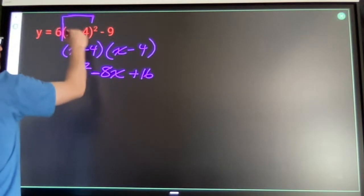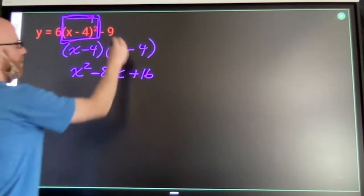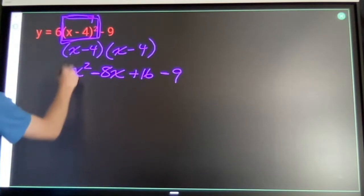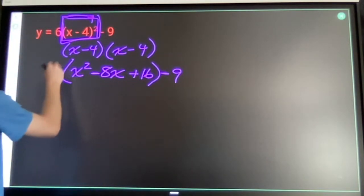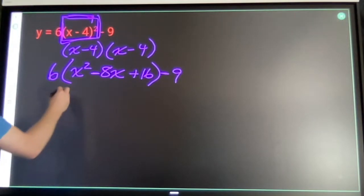That's just this piece. We still have minus 9, and we still have this times 6. So let's distribute my times 6.